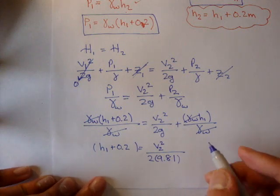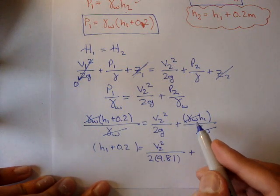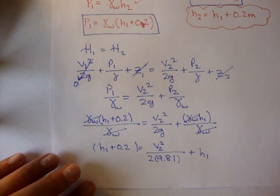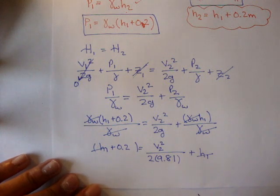In this case it's 9.81 because we're in metric units, plus here we're just left with h1. And what do you know? The h1 and the h1 here cancel out.